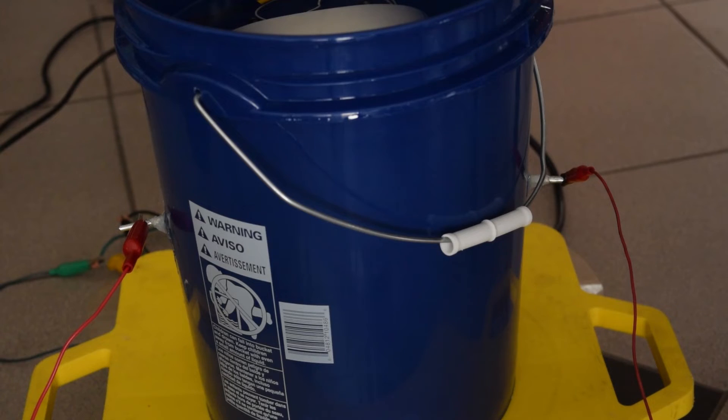Here's a better view of those electrical feed through terminals for the AC in and the ground. From this angle you can see the two high voltage feed throughs on the other side of the bucket.